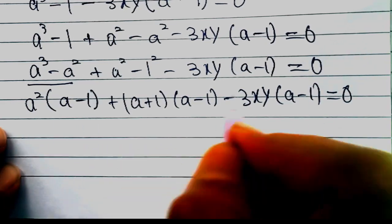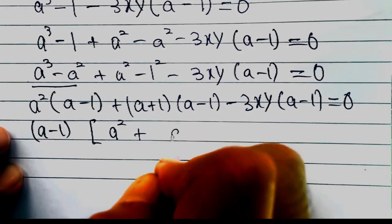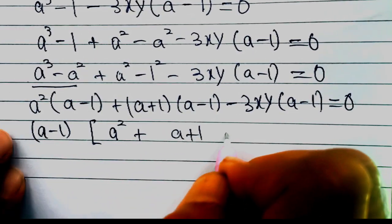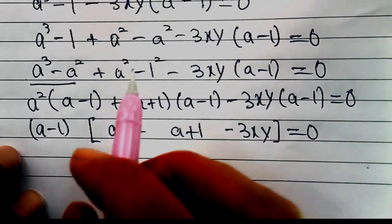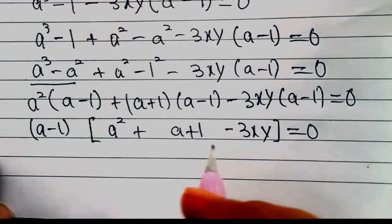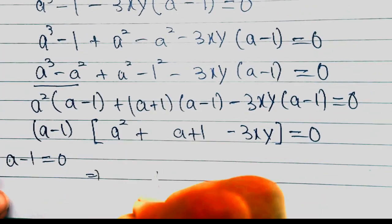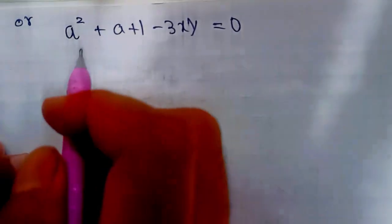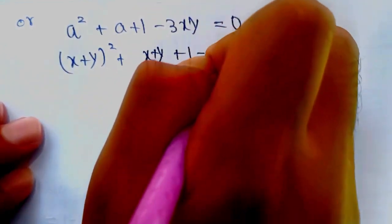Taking (a - 1) common from all three terms: (a - 1)(a² + a + 1 - 3xy) = 0. So either a - 1 = 0, meaning a = 1 (i.e., x + y = 1), or a² + a + 1 - 3xy = 0, which gives (x + y)² + (x + y) + 1 - 3xy = 0.